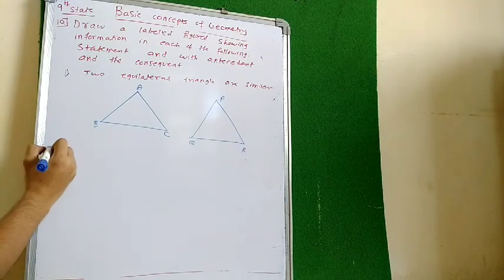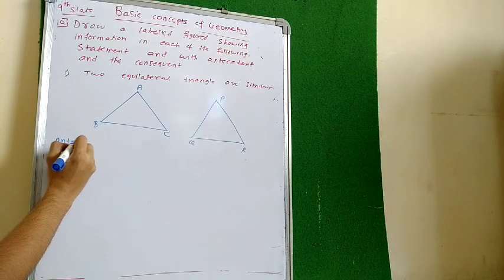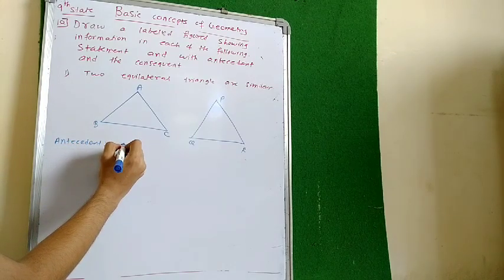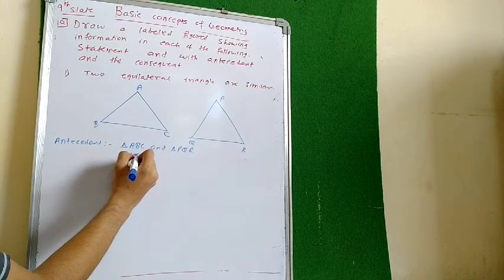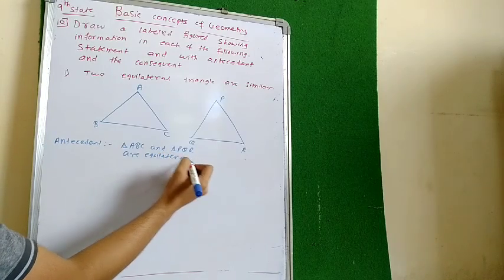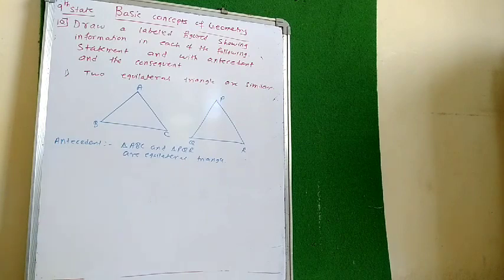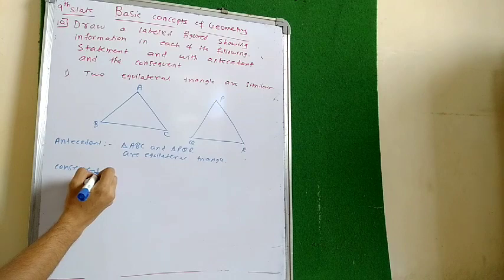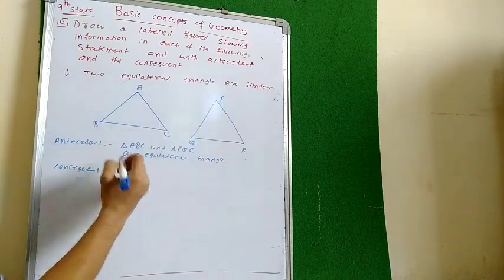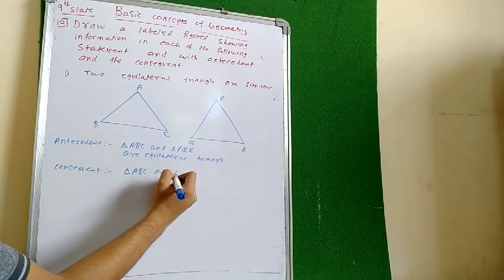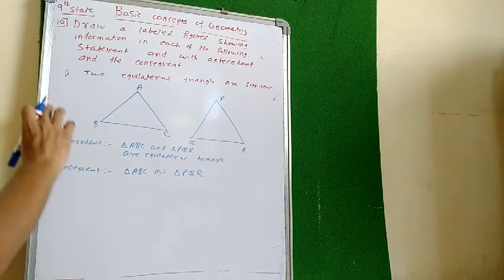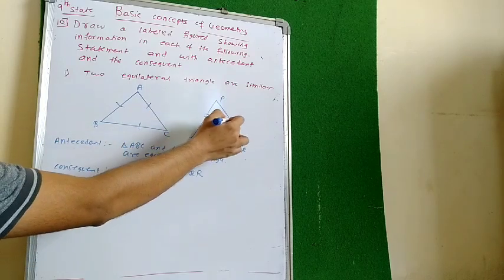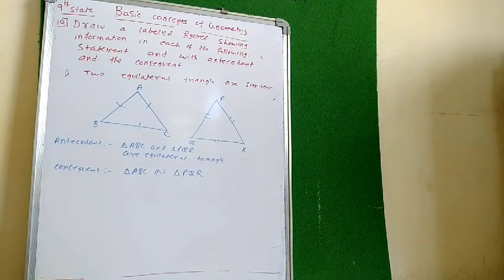Two triangles are equilateral triangles. So what will be the given part — the antecedent part? The consequent part will be that triangle ABC and triangle PQR are equilateral triangles that are similar. If in the school you have a different answer, do let me know — it's not an issue.